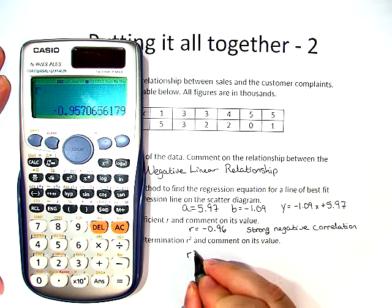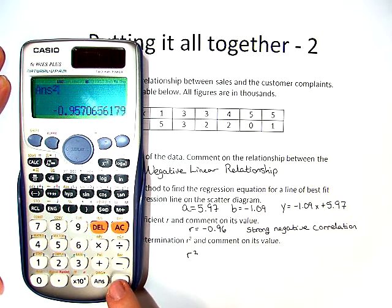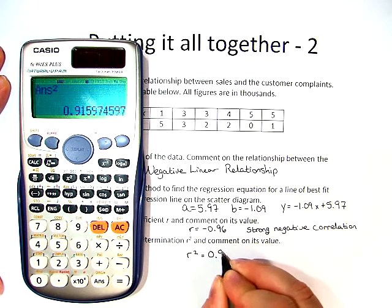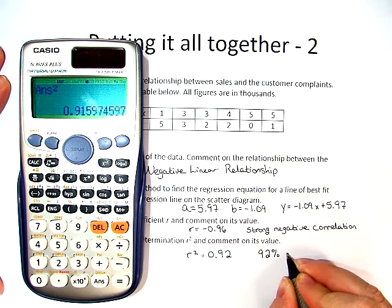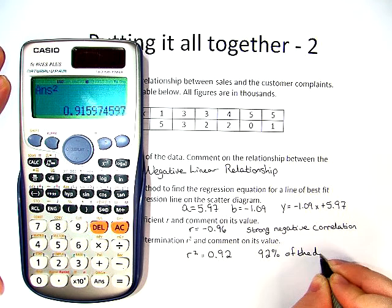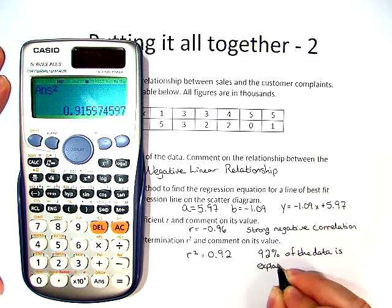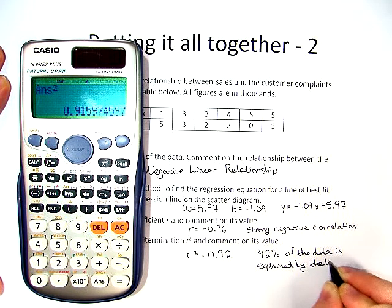Now we need to do r squared. So all we have to do is square what we found by hitting the squared button, and we get r squared is 0.92, or 92% of the data is explained by the line.